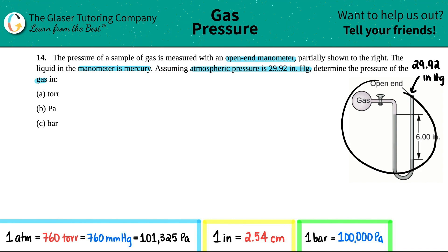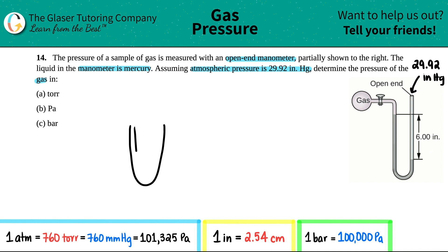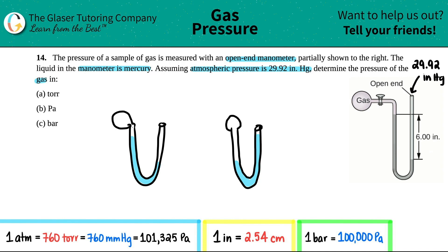There are basically two ways that an open manometer is going to affect the gas. Let's draw a U-shape. When your manometer is open, you have two different options: your gas is either going to be higher on the left hand side and lower on the right, or lower on the left and higher on the right — with the closed end leading off to the gas. In our situation, we're dealing with the case where the higher end is pointing towards the gas.